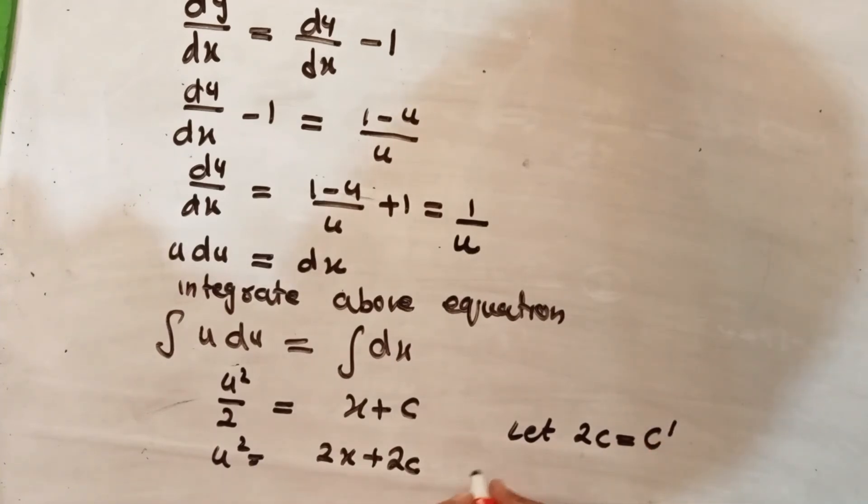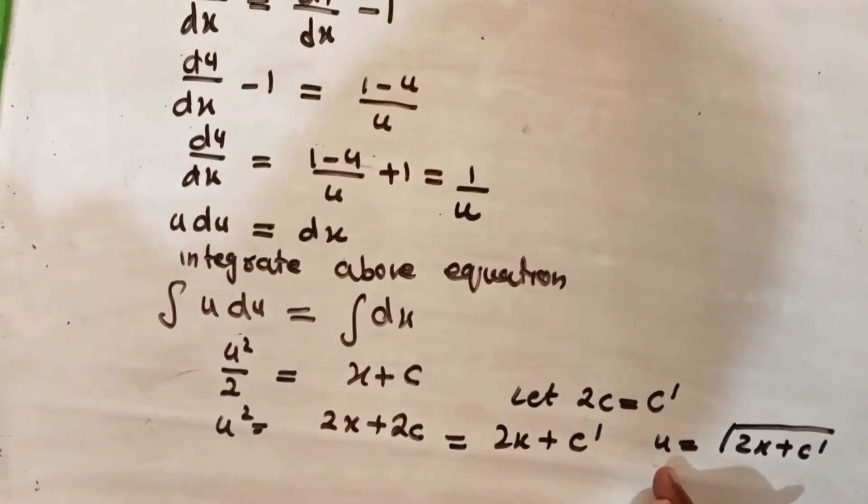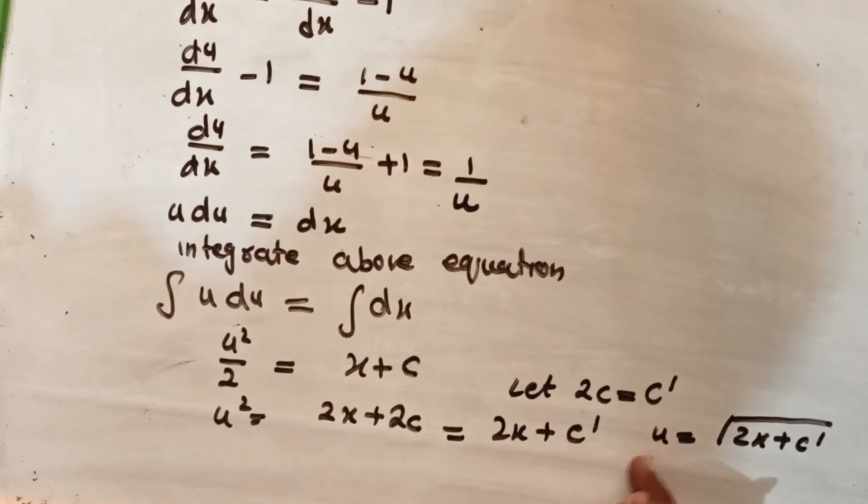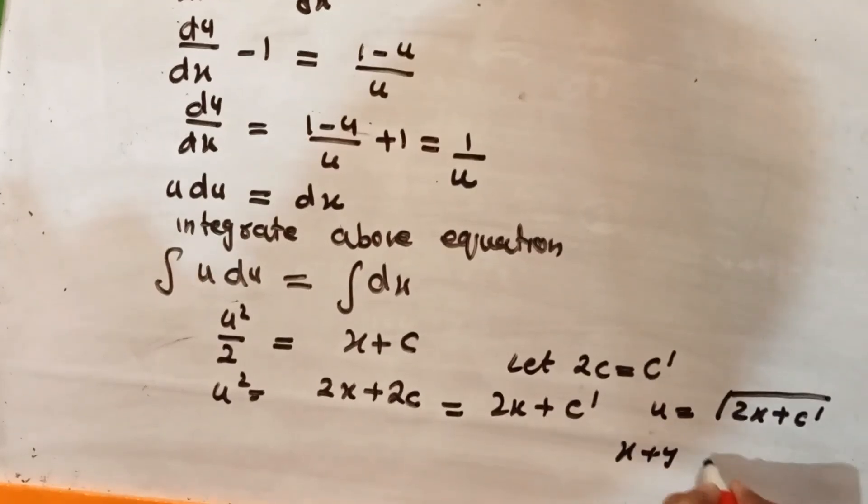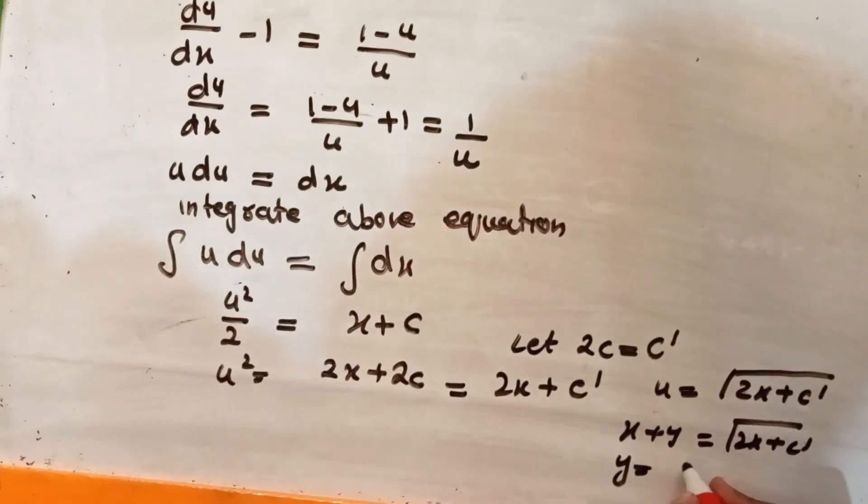So u square is equal to 2x plus c prime, and u is equal to x plus y. So x plus y is equal to square root 2x plus c prime, and y is equal to square root 2x plus c prime minus x.